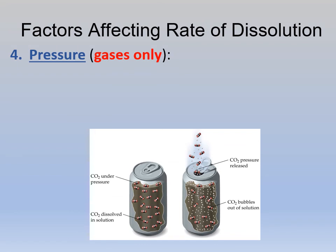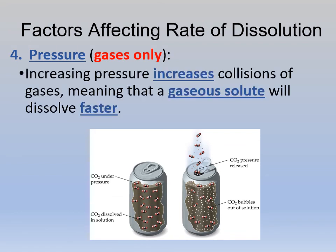The last factor is pressure — this is for gases only. If you increase the pressure of a gas, that increases how many collisions occur, and it will dissolve faster. Soda is carbonated because it has carbon dioxide. They get it in there by trapping it in the can under a ton of pressure. When you open a bottle, there's less pressure, and it becomes flat — the CO2 leaves the solution. So if you want to dissolve a gas, you need to increase pressure and decrease the temperature.